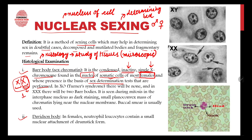In Turner syndrome, an exceptional sexual abnormality, the genotype is XO — one functional X and no additional X — so there is no Bar body. However, in triple X syndrome (XXX), one X is the normal one and the other two are inactive, giving two Bar bodies. The number of Bar bodies equals the number of X chromosomes minus one.